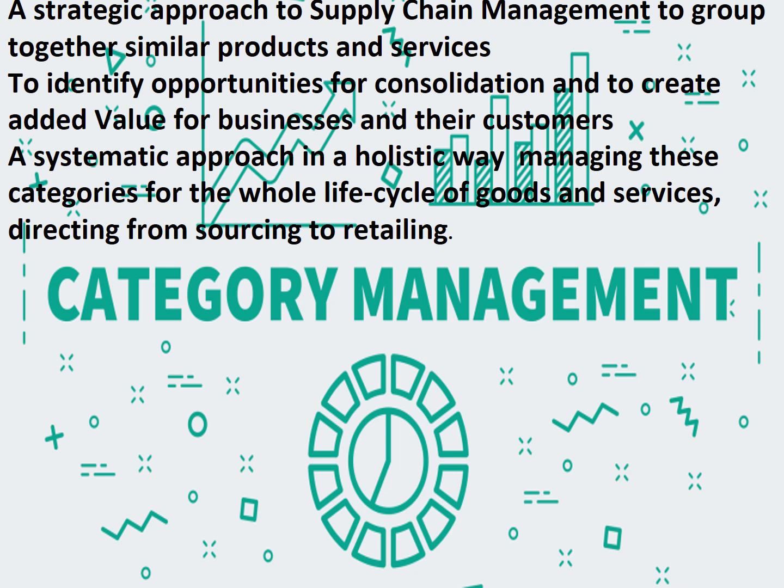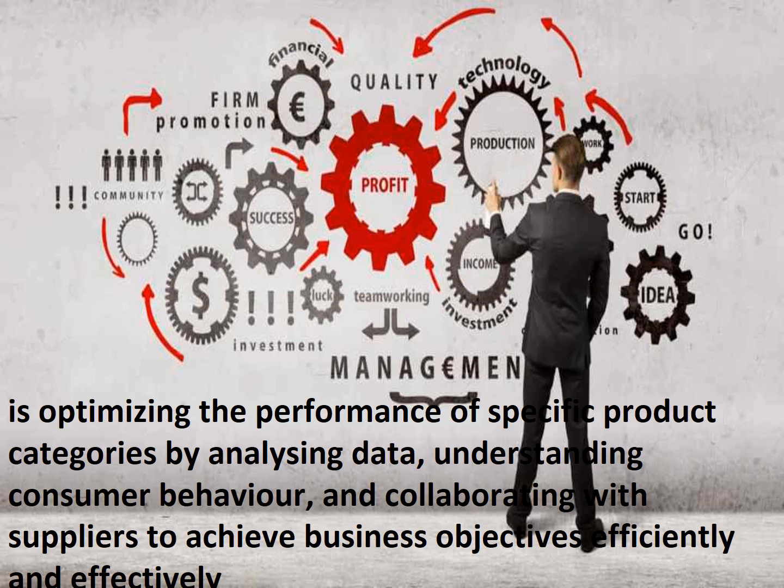Let's start with defining Category Management first. It is a strategic approach to supply chain management where organizations group together similar products and services to identify opportunities for consolidation and to create added value for businesses and their customers. Then, systematically in a holistic way, managing these categories for whole life cycles of goods and services, starting from sourcing to retailing.